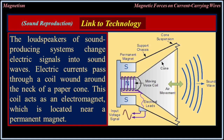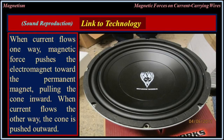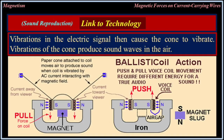Sound reproduction linked to technology. The loudspeakers of sound-producing systems change electric signals into sound waves. Electric currents pass through a coil wound around the neck of a paper cone. This coil acts as an electromagnet, which is located near a permanent magnet. When current flows one way, magnetic force pushes the electromagnet toward the permanent magnet, pulling the cone inward. When current flows the other way, the cone is pushed outward. Vibrations in the electric signal then cause the cone to vibrate, and vibrations of the cone produce sound waves in the air.